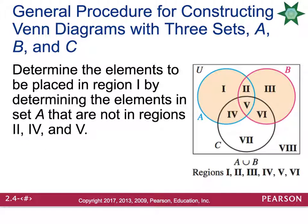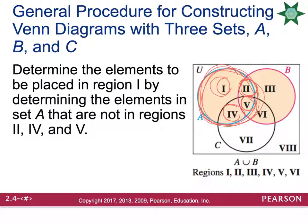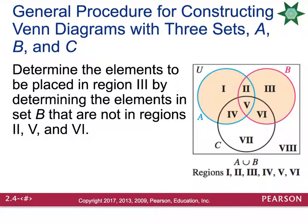Then you'll want to figure out what is going to go in Region 1, which is going to be all of Set A. So you need to find all items that involve Set A. You need to make sure to deduct out Regions 2, 5, and 4, because you've already included those. The remaining items that are left will go into Region 1. You'll have the same procedure for Circle B, and you'll do the same thing again for Circle C.